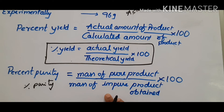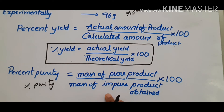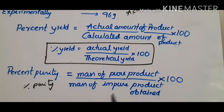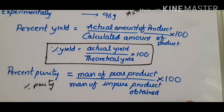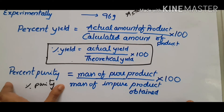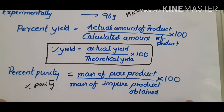Percent purity is easy to use in daily life. If you use a gold shop, you can check purity. In a pharma company, medicines and tonics must be very pure — tablets should not have any impurities. If there are impurities, for example in a calcium tablet, there can be side effects. Percent purity is very important whether it is gold, pharma industry, tire industry — any manufacturing industry uses it.